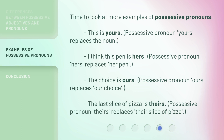Time to look at more examples of possessive pronouns. 'This is yours' — possessive pronoun 'yours' replaces the noun. 'I think this pen is hers' — possessive pronoun 'hers' replaces 'her pen.' 'The choice is ours' — possessive pronoun 'ours' replaces 'our choice.' 'The last slice of pizza is theirs' — possessive pronoun 'theirs' replaces 'their slice of pizza.'